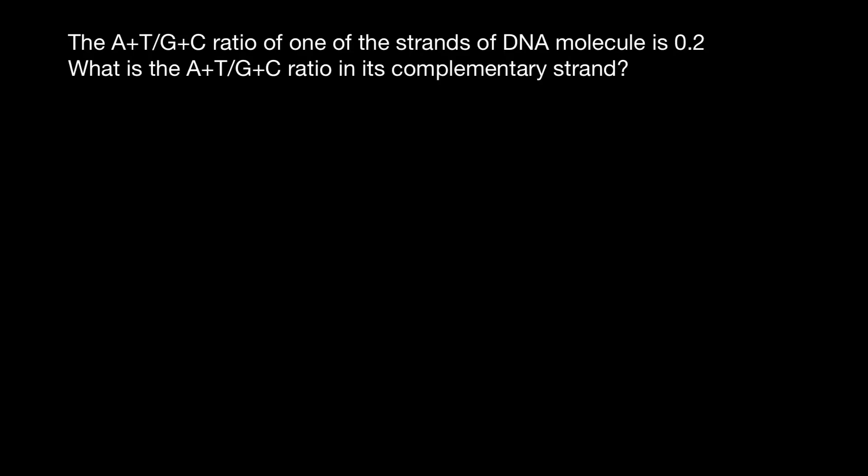So how we are going to solve this problem? So again, we have two bases, adenine and thymine, and its ratio is 0.2. That means, for example, we have two bases of adenine and thymine on one strand of the DNA, and on the same strand of the DNA, we have 10 bases of guanine and cytosine.